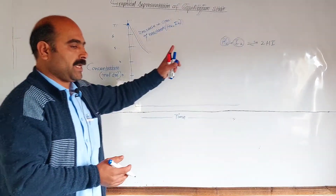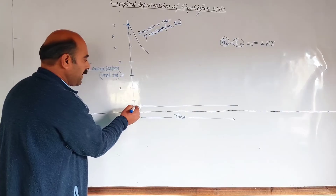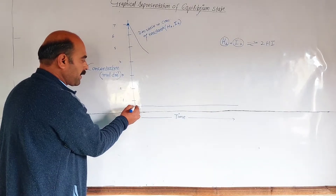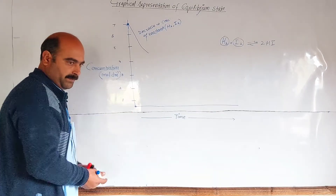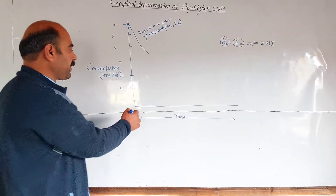At the start of the reaction, the product concentration is zero. With the passage of time, the concentration of the product (hydrogen iodide) begins to increase.